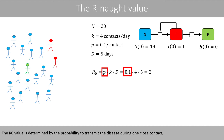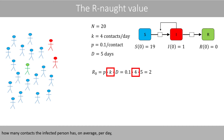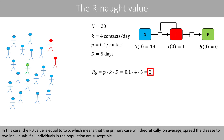The R0 value is determined by the probability to transmit the disease during one close contact, how many contacts the infected person has on average per day, and how many days the person is infected. In this case, the R0 value is equal to two, which means that the primary case will, on average, spread the disease to two individuals if all individuals in the population are susceptible.